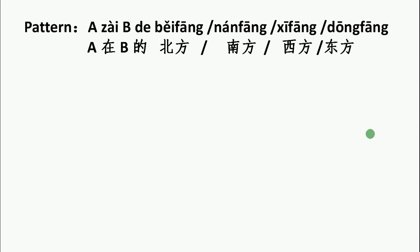Now let's see the pattern. A 在 B 的 北方 means A is in the north of B. A 在 B 的 南方 means A is in the south of B. A 在 B 的 西方 means A is in the west of B. A 在 B 的 东方 means A is in the east of B.